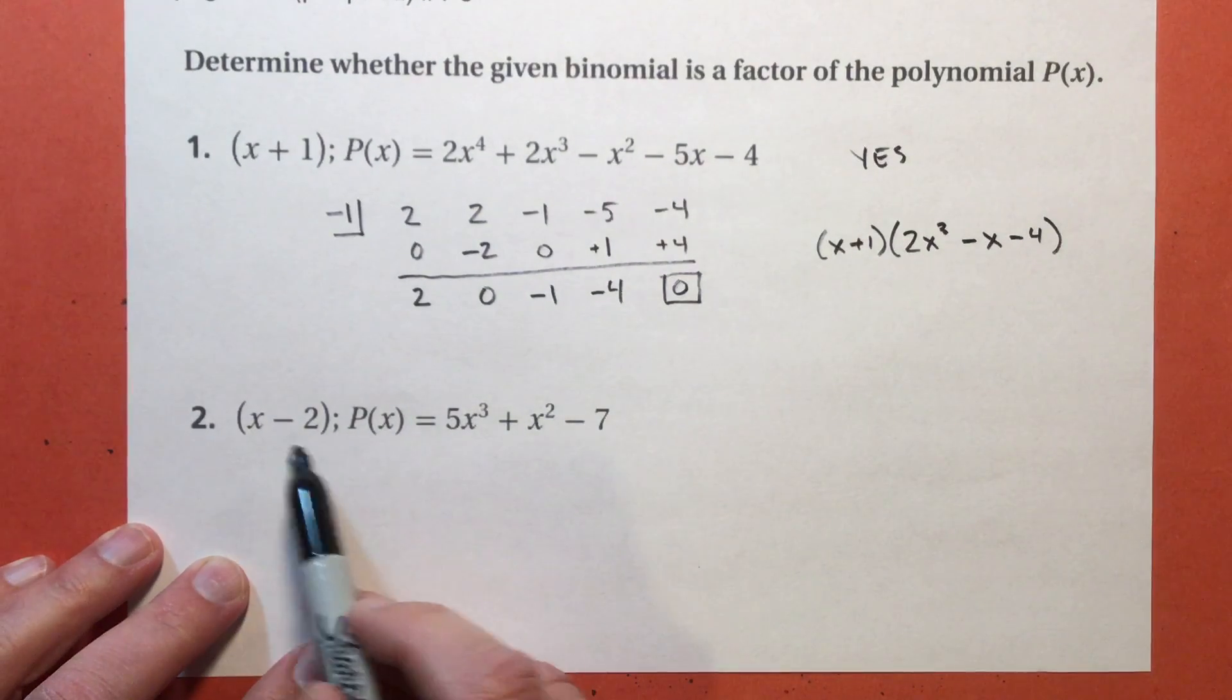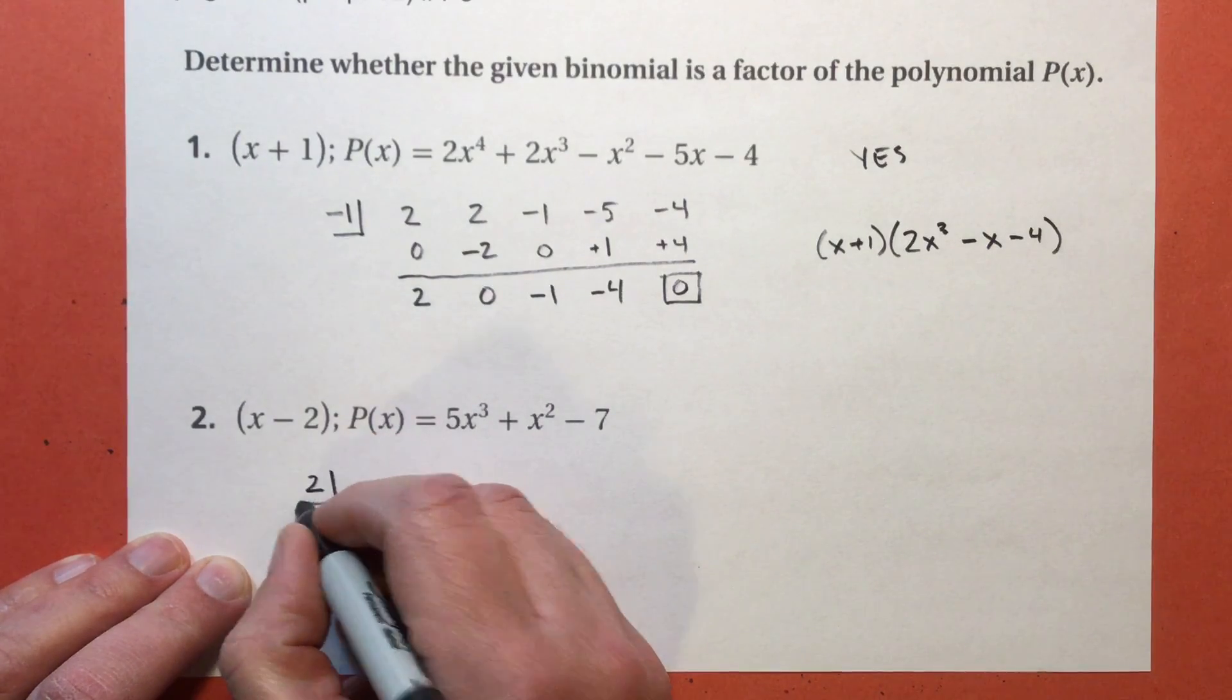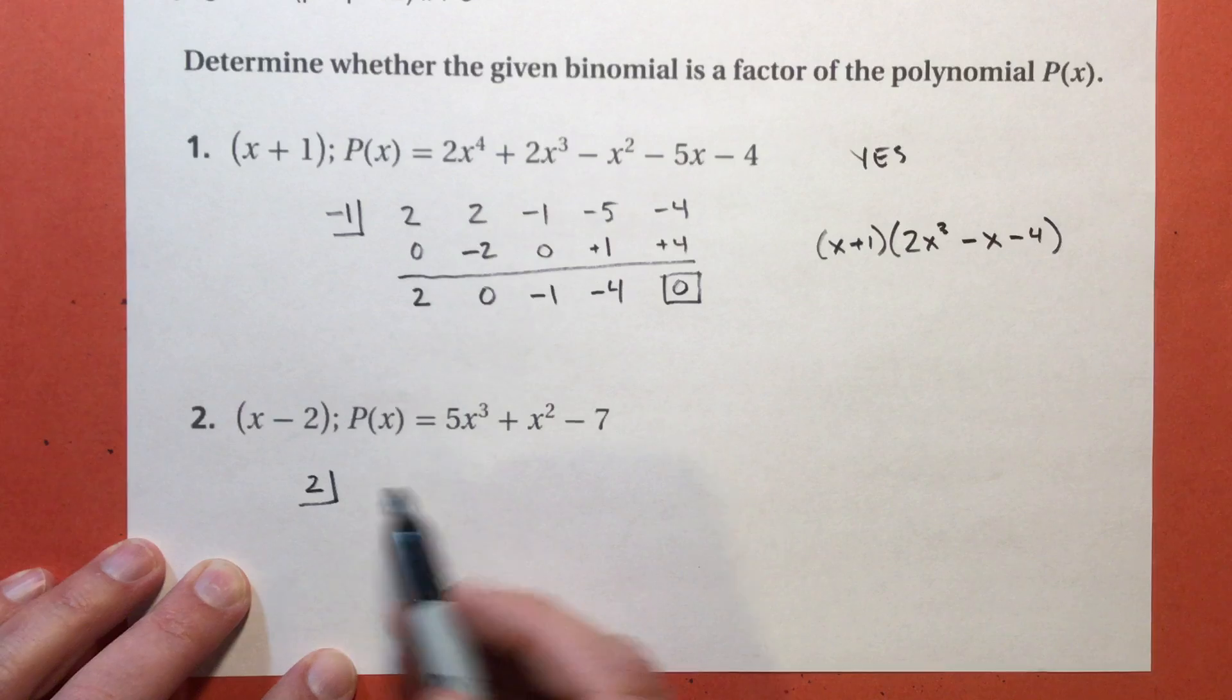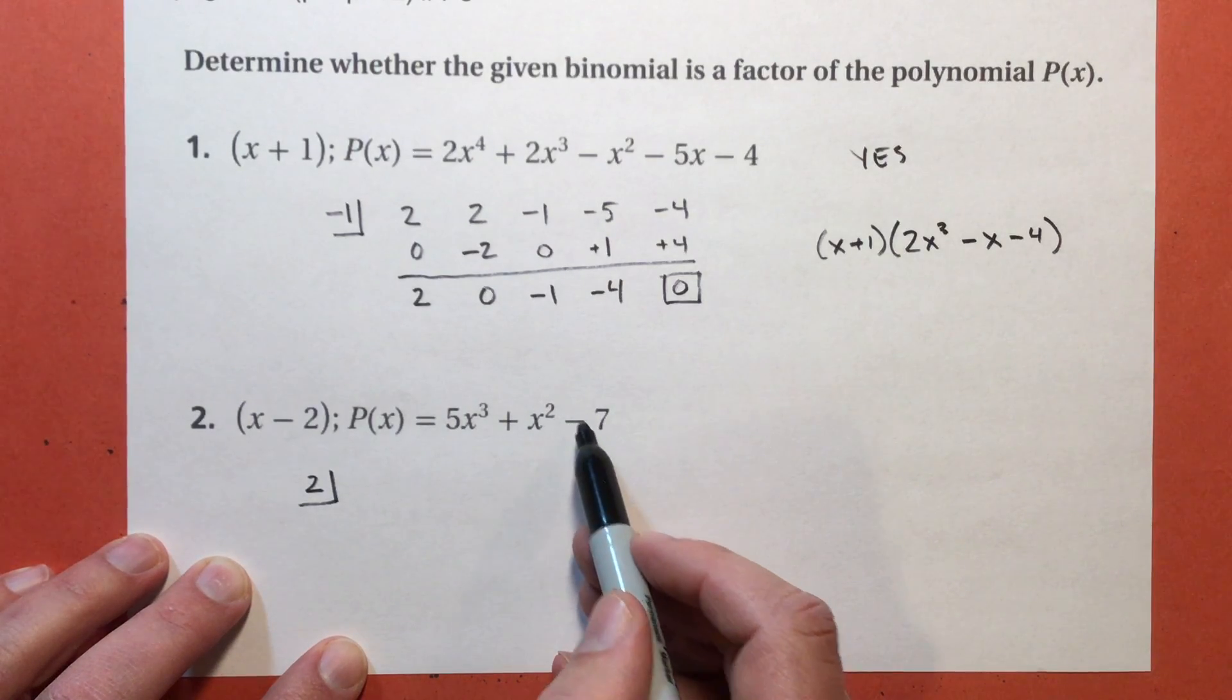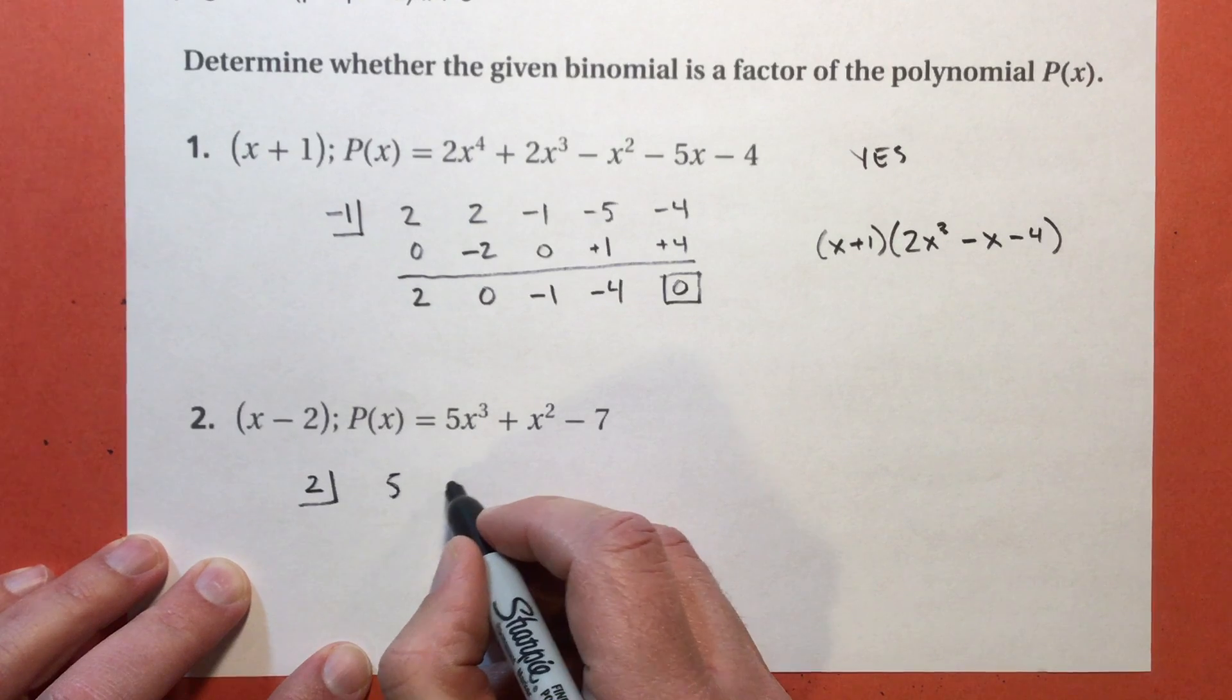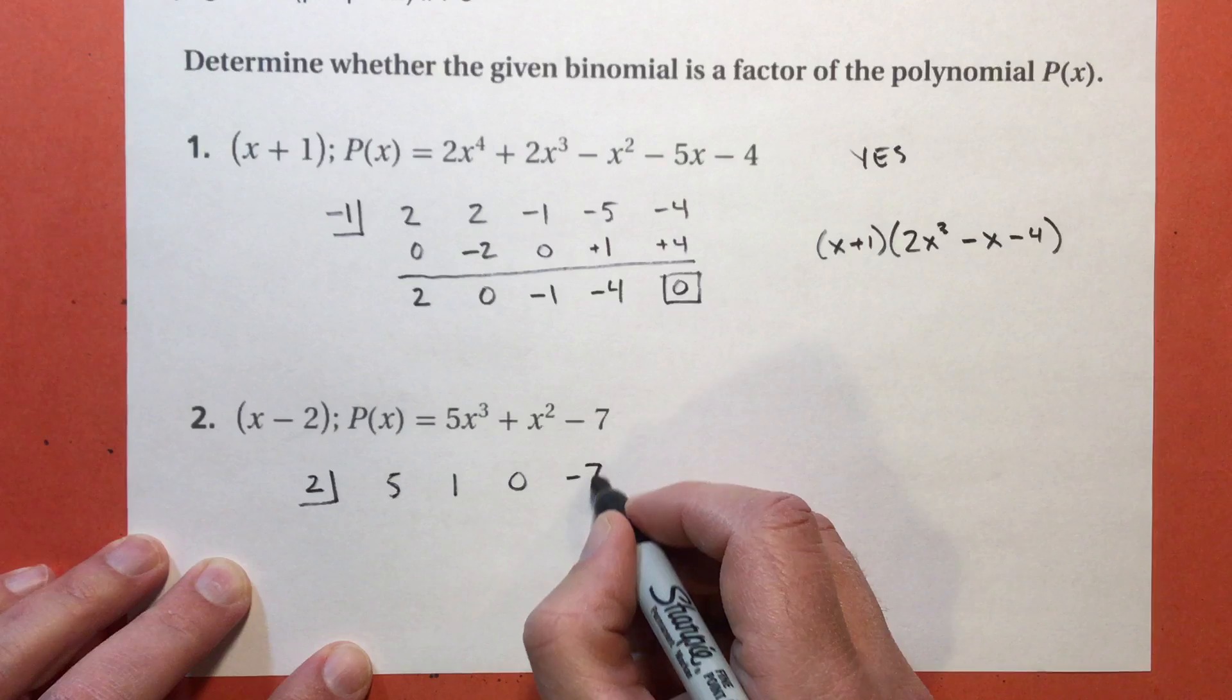So is x minus 2 a factor of this one? So I got my minus 2, so I'm going to put my 2 here. And remember, that means x subtract 2 equals 0, so x equals 2. That's my 0. I've got x to the third, x to the second. I do not have any x to the first power. So I have to remember to put that in. 5, 1, 0x, negative 7.